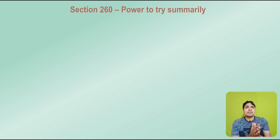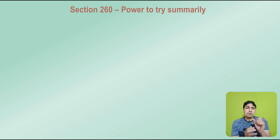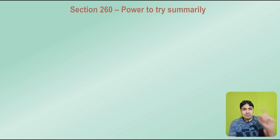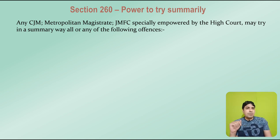Now Section 260 — we will discuss the power to try summarily. In this particular section, the court's power to try any case in a summary manner is provided. Any Chief Judicial Magistrate, Metropolitan Magistrate, or Judicial Magistrate First Class specially empowered by the High Court may try in a summary way all or any of the following offences.